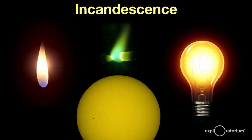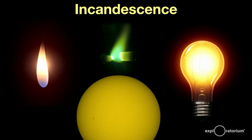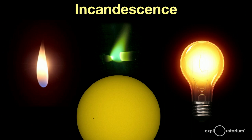So far, the atomic excitation we've discussed happens in rarefied gases — the gas in my discharge tubes, the gas in cosmic nebulae, the sun's outer atmosphere, and the Earth's outer atmosphere have all been gas at a very low pressure, where the atoms are far apart. What happens when atoms are close together?